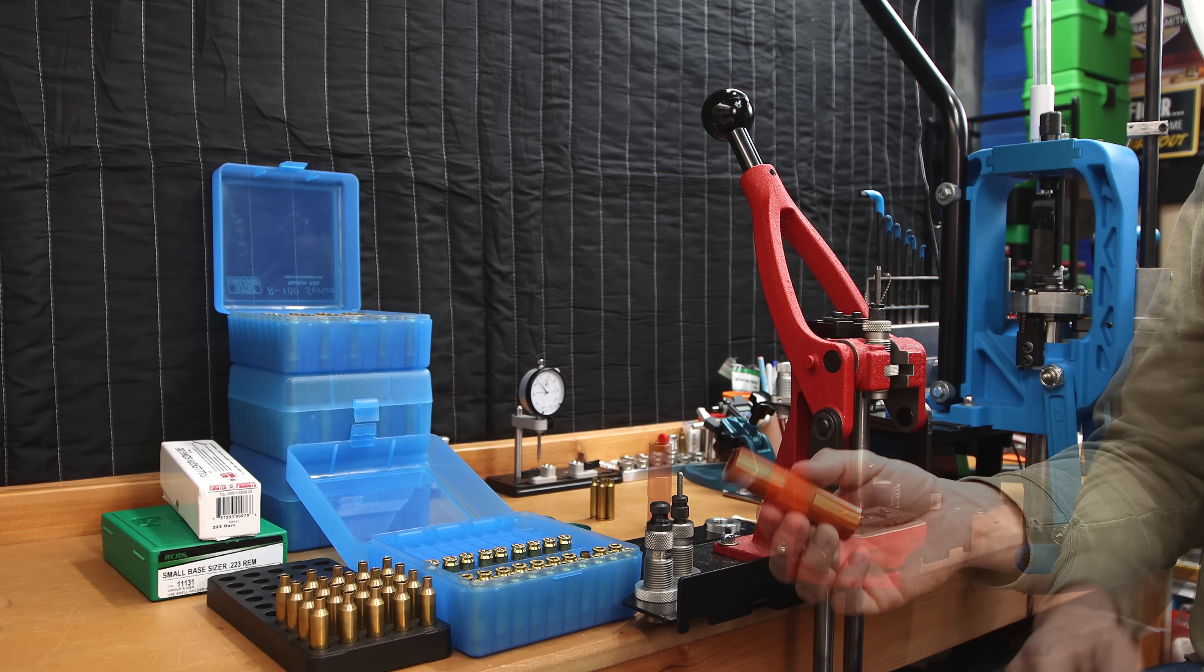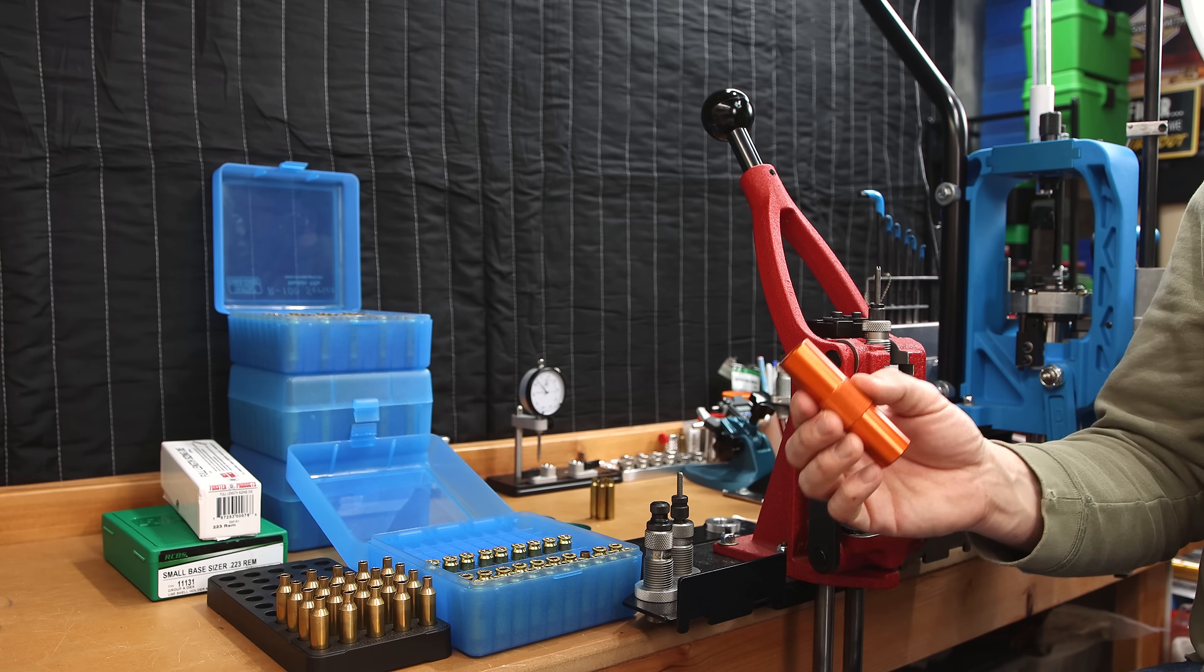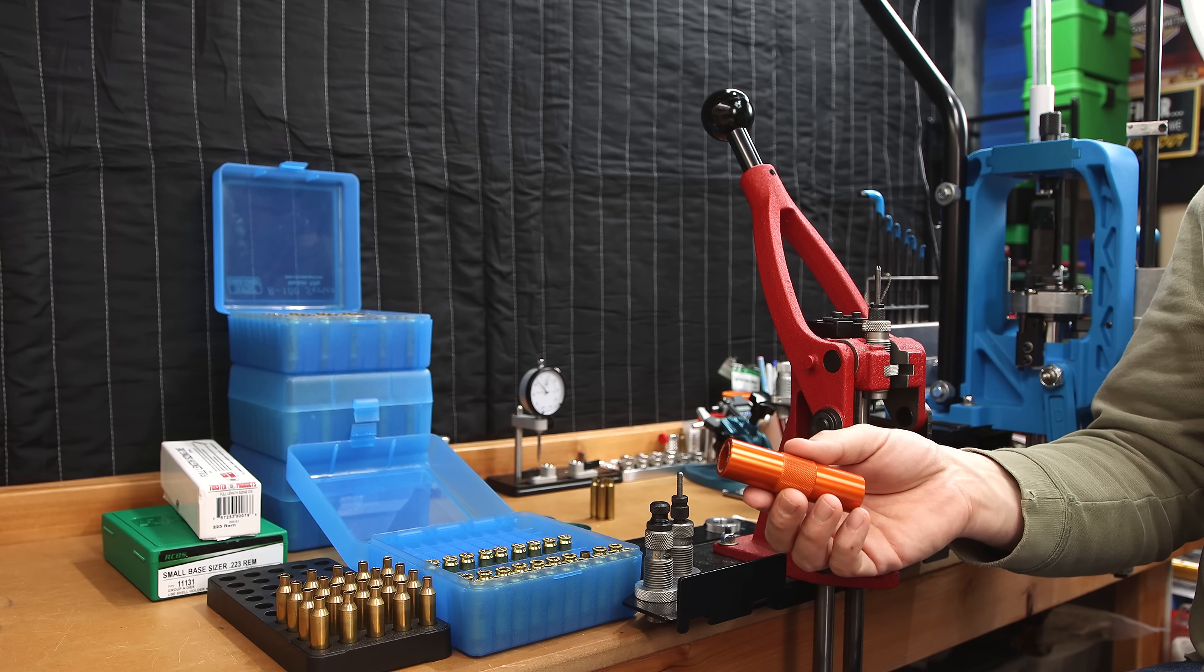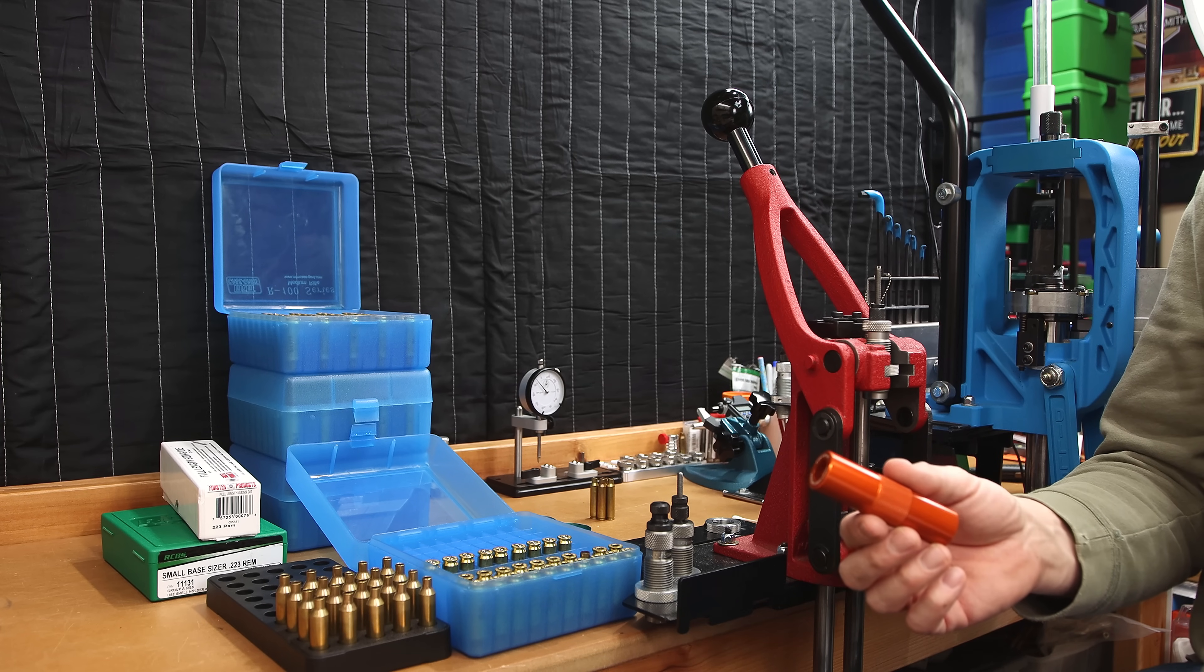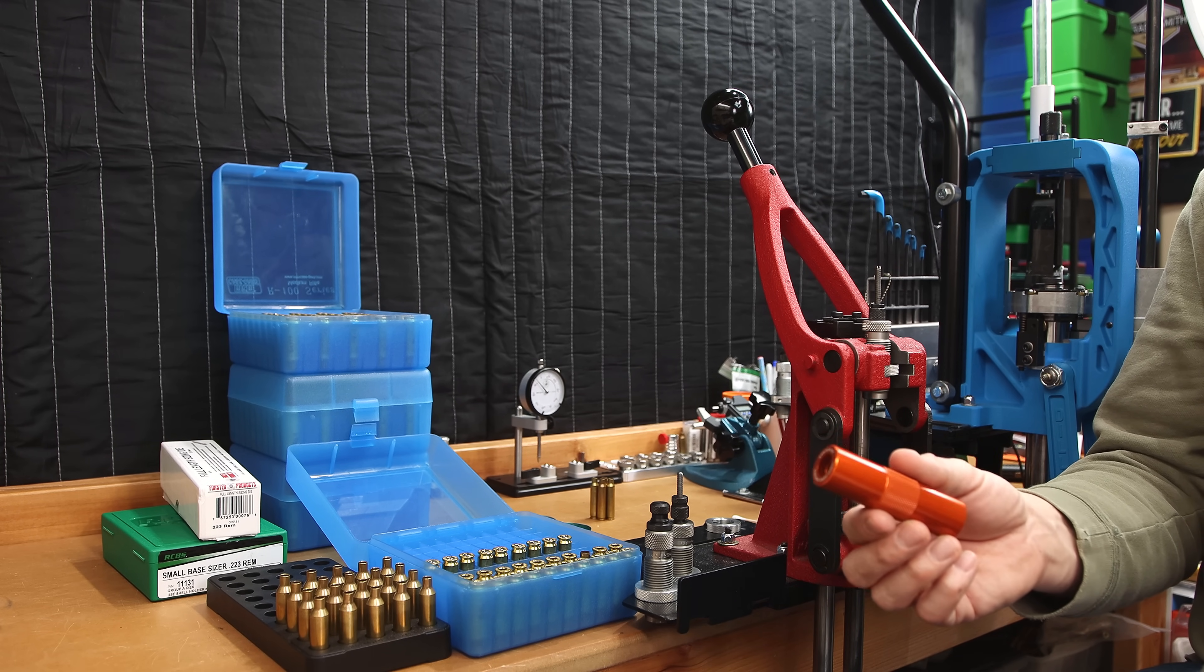I'm not sure it's the best for accuracy or case life, but it may work. Others set their dies so it will fit in these case gauges. Again, if you're just trying to know if it will chamber, these will work just fine, I guess. Personally, I think it's still sacrificing case life and accuracy if you're setting up your die to fit your brass in a case gauge.